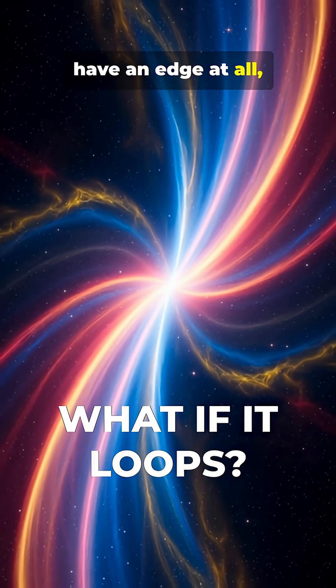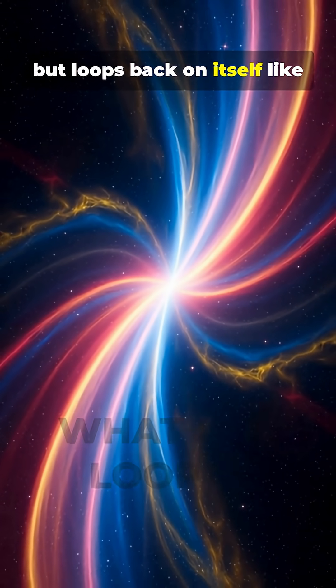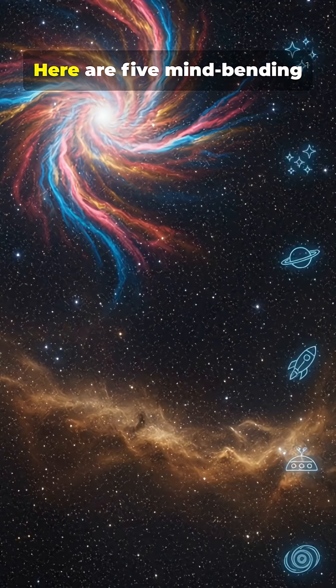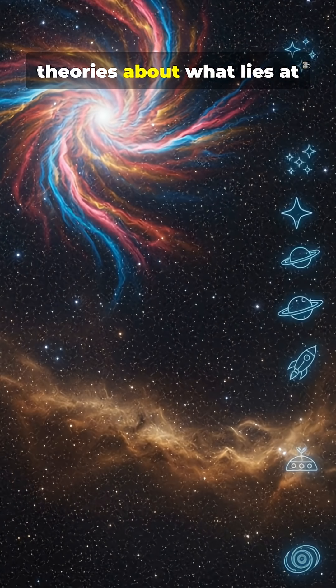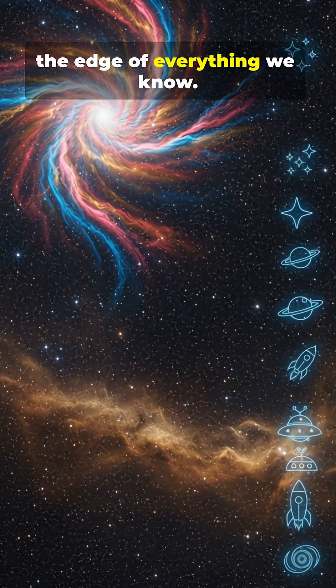What if the universe doesn't have an edge at all, but loops back on itself like a cosmic sphere? Here are five mind-bending theories about what lies at the edge of everything we know.